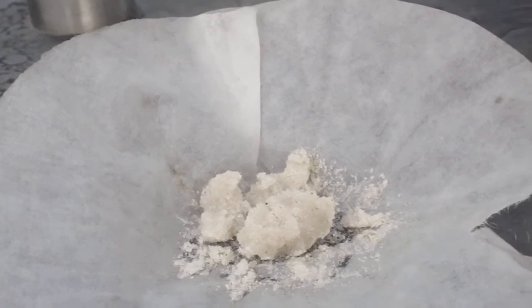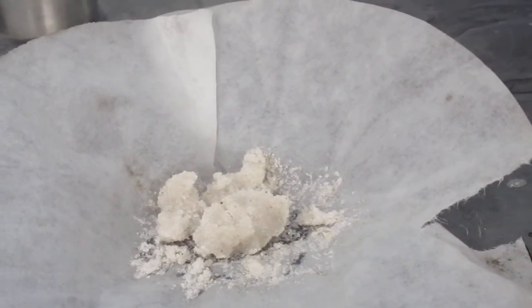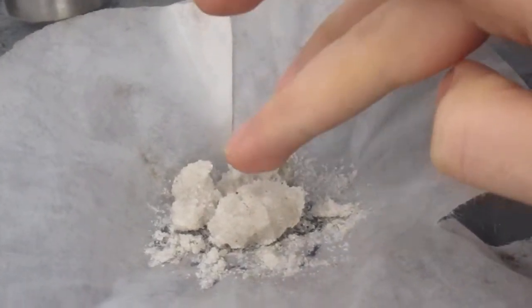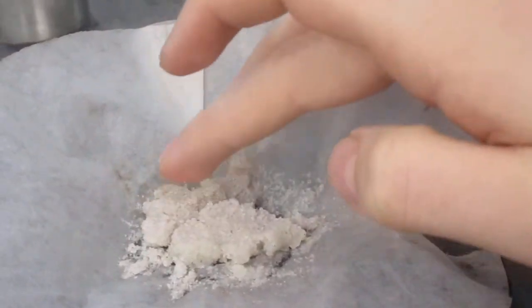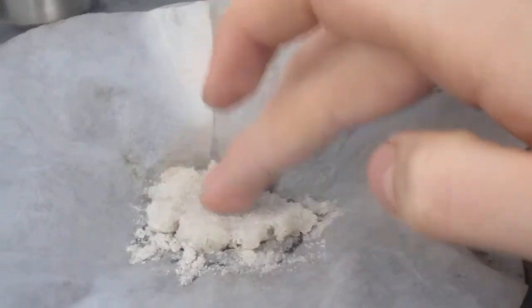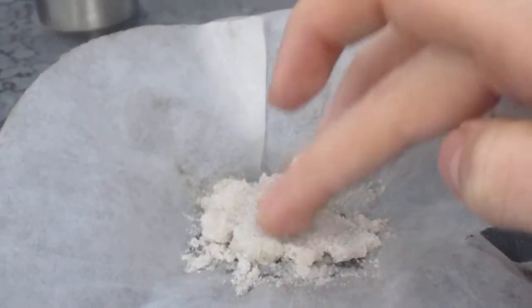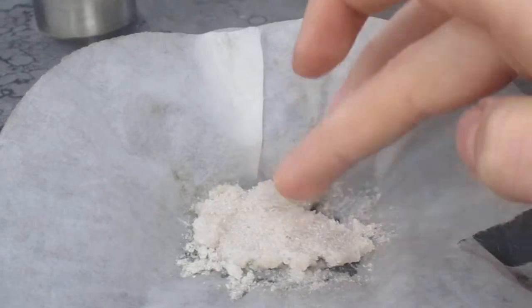But right now it's still extremely wet. To speed up the drying though, what you can do—oh yeah, it's wet, you can just tell it's wet just by me doing this, kind of making a patty out of it—but at least this way I'm spreading it out. This will allow it to heat up faster.